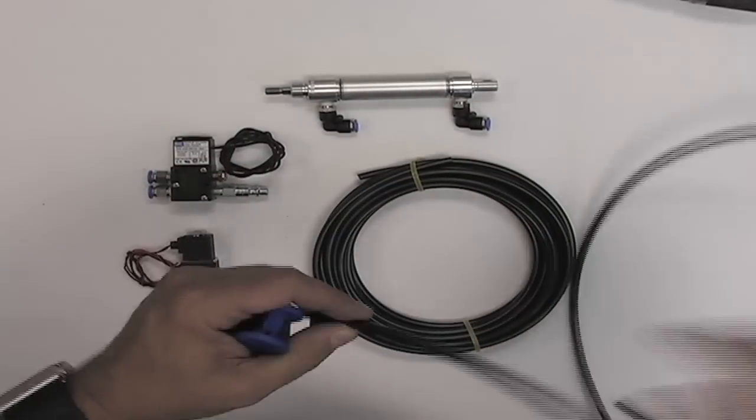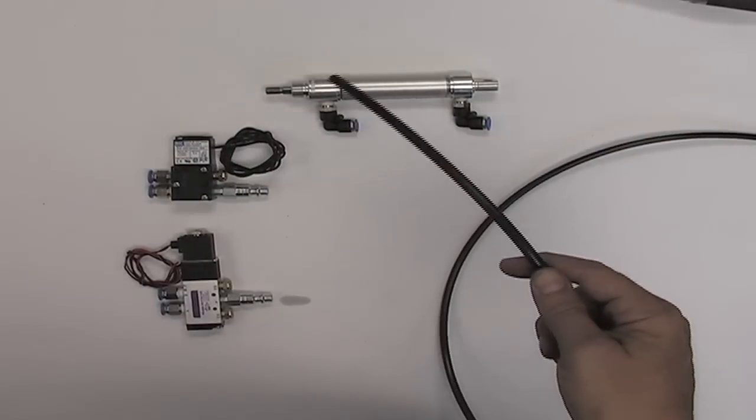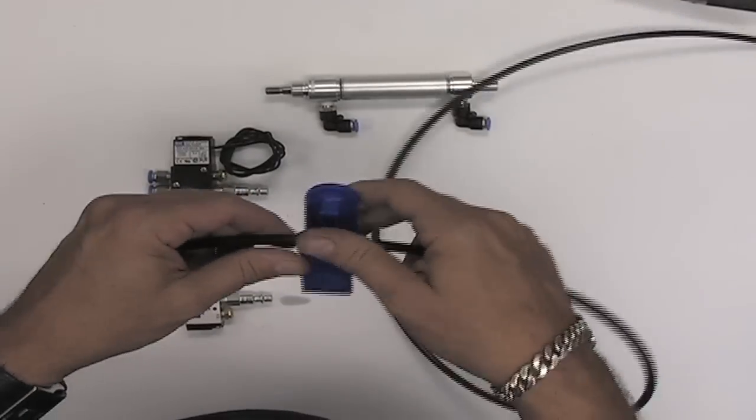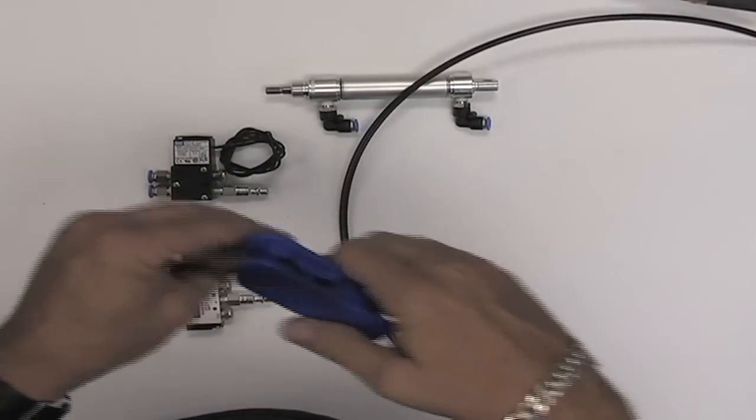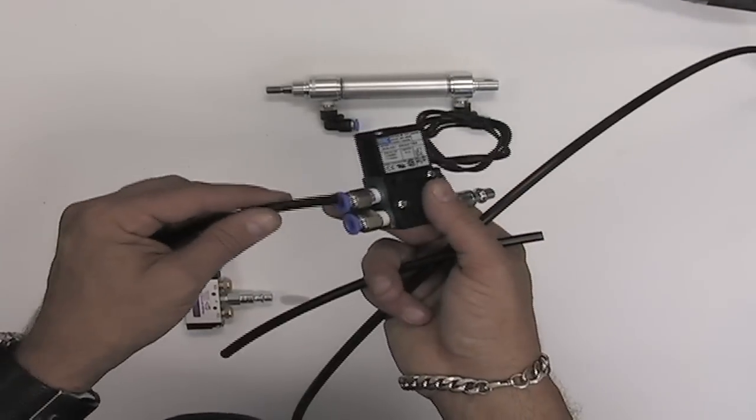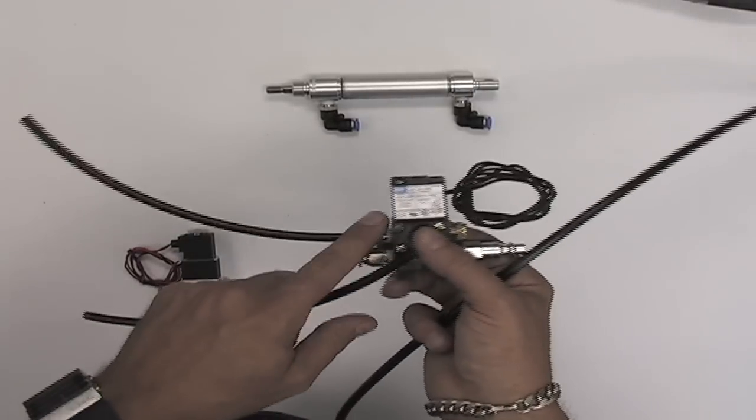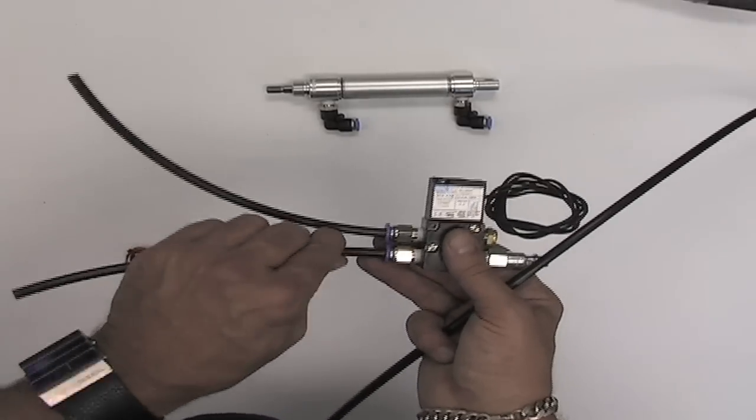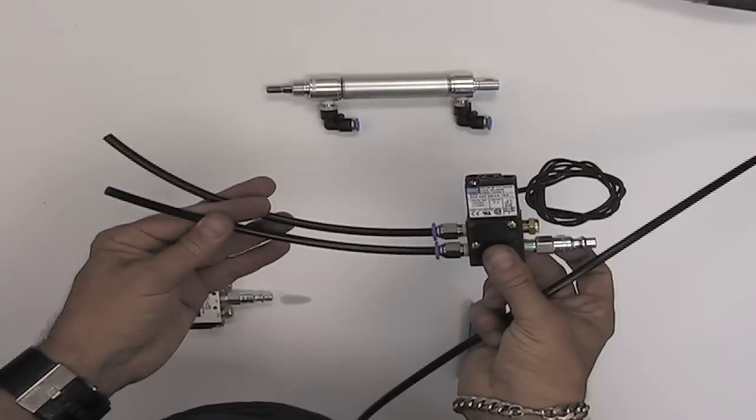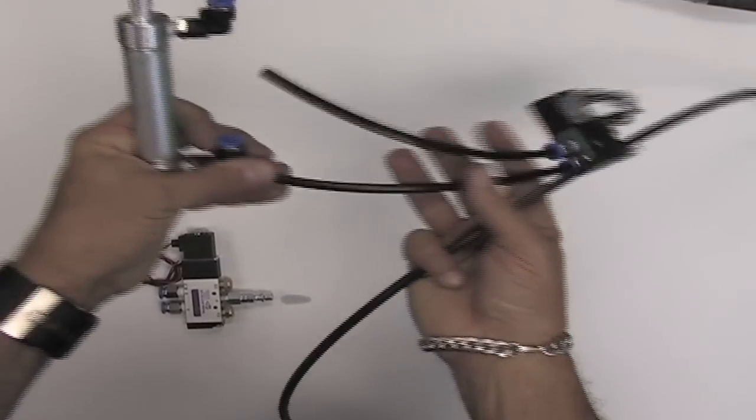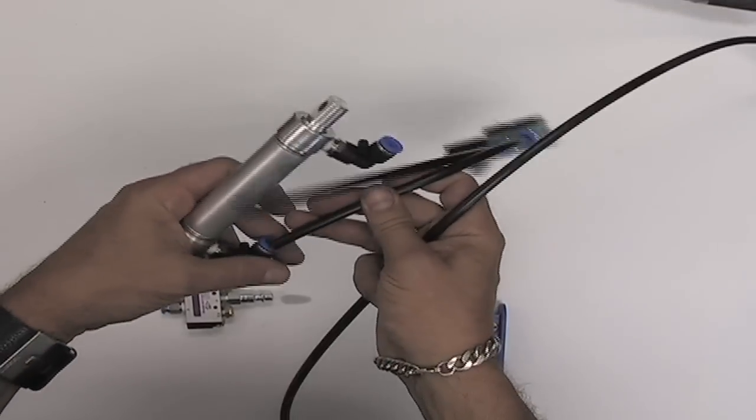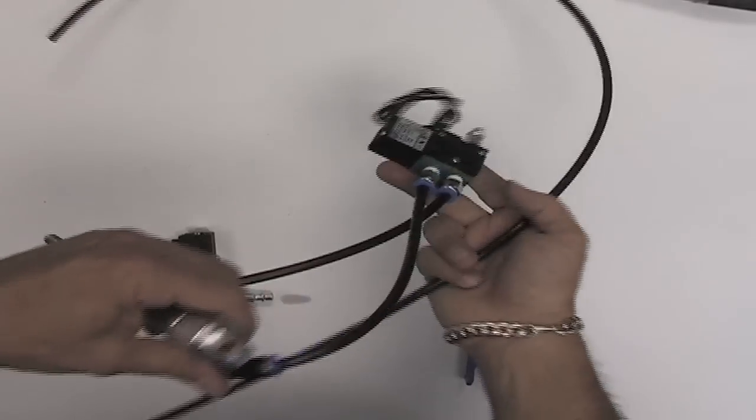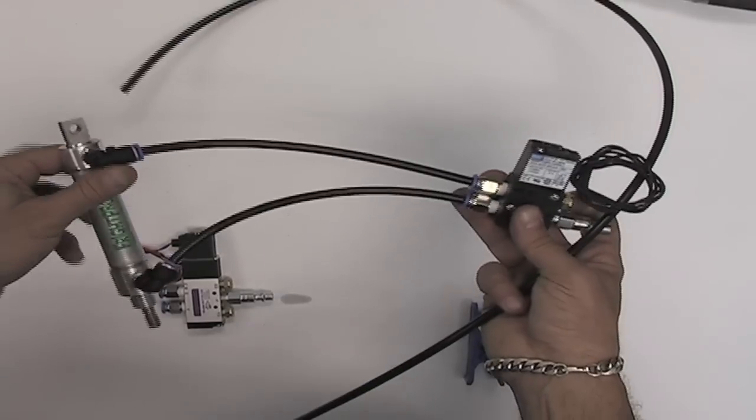I'm going to hook up our cylinder using some quarter inch air line that comes with the kit. You can cut this with anything; I'm using one of our tubing cutters here. A piece of air line goes into one of the fittings going out of the solenoid and the other one to the other port going out, and those two go to the cylinder. I've cut them real short, but the kit comes with 20 feet of air line so you can make it any size you want.